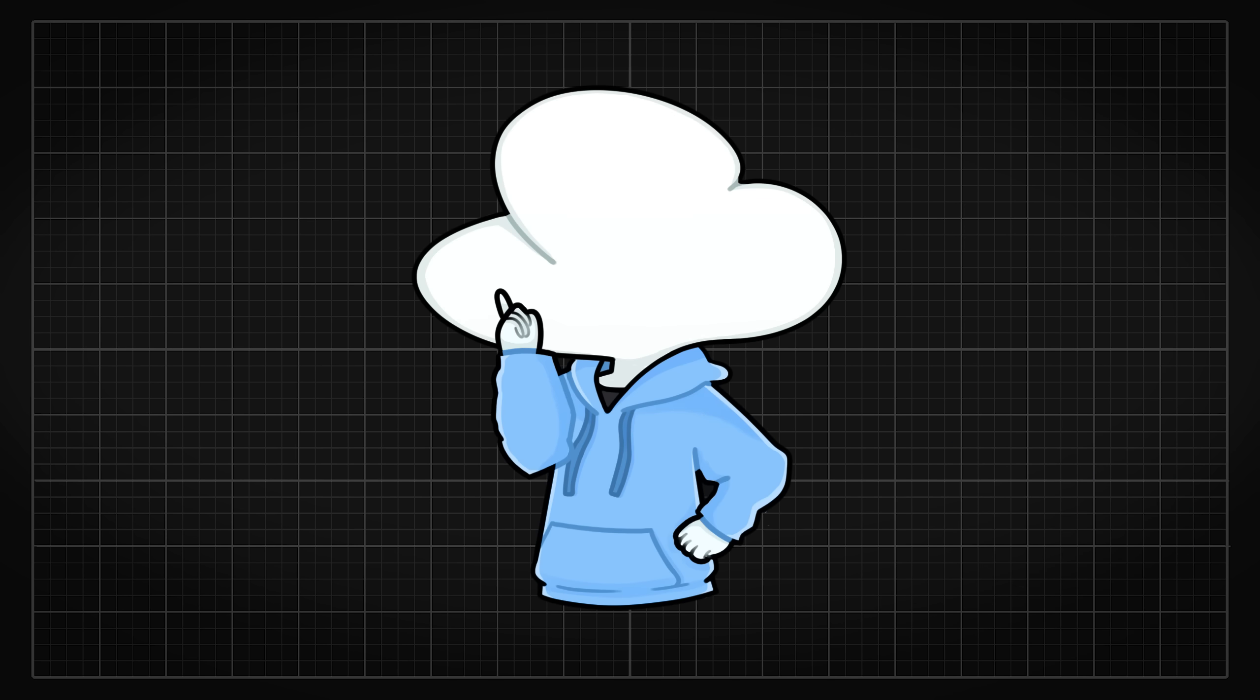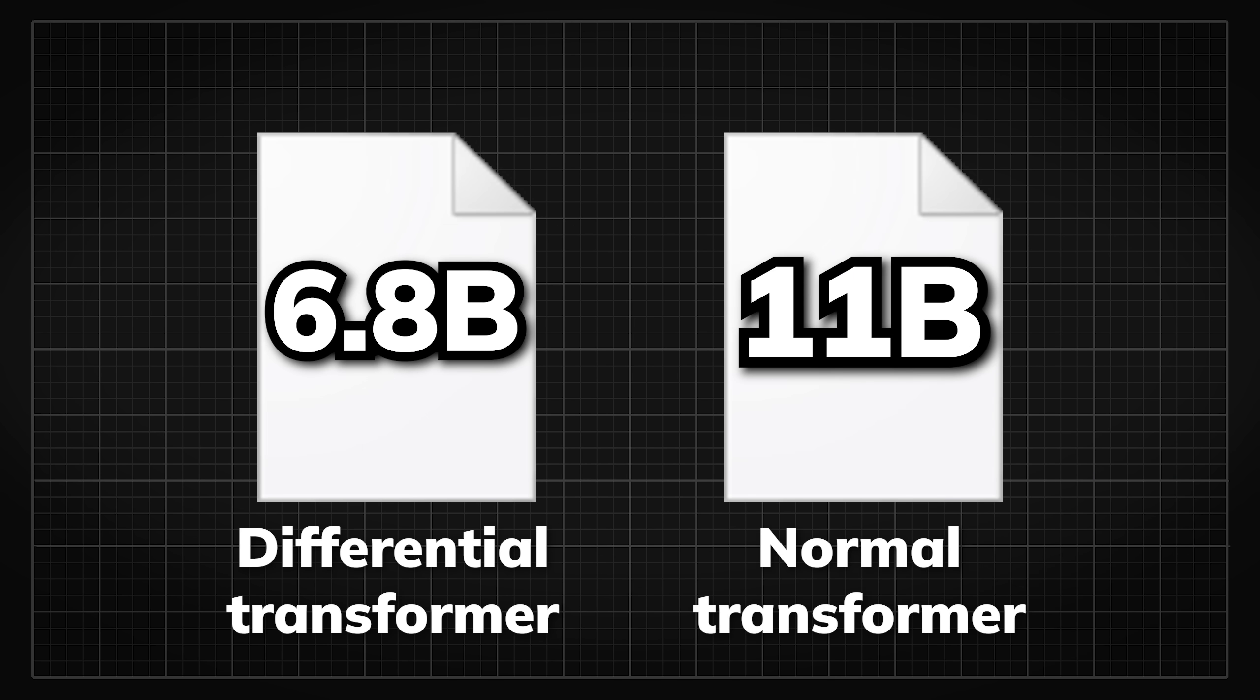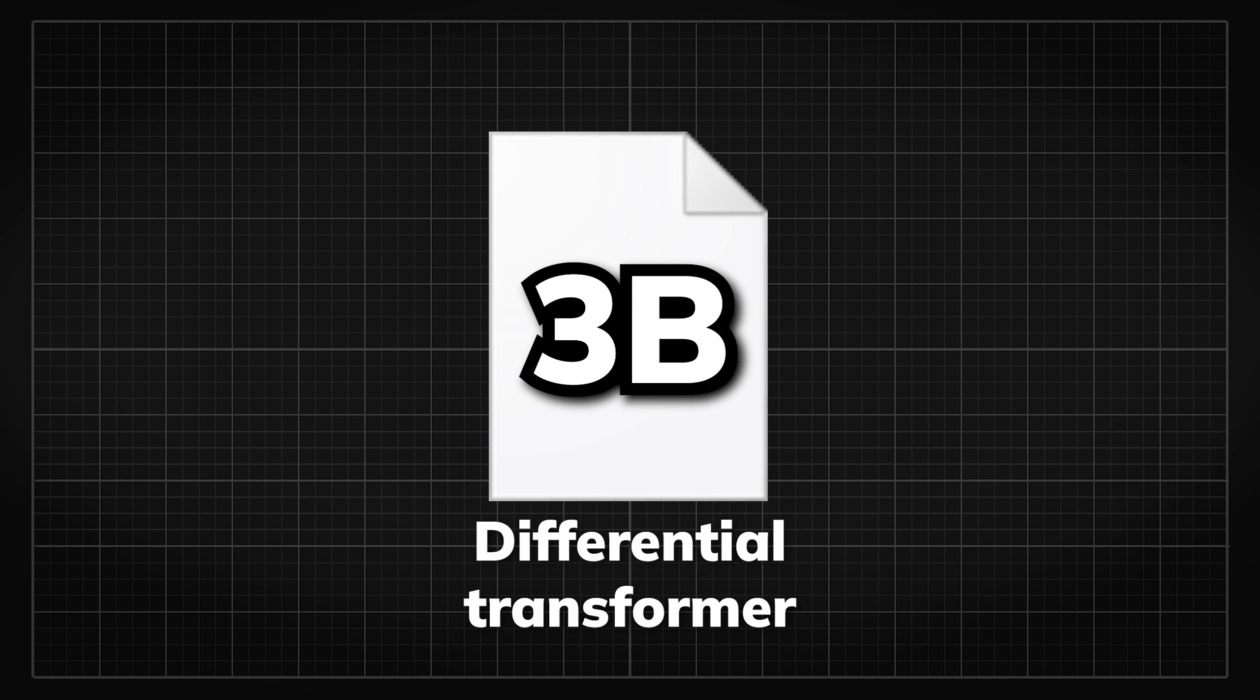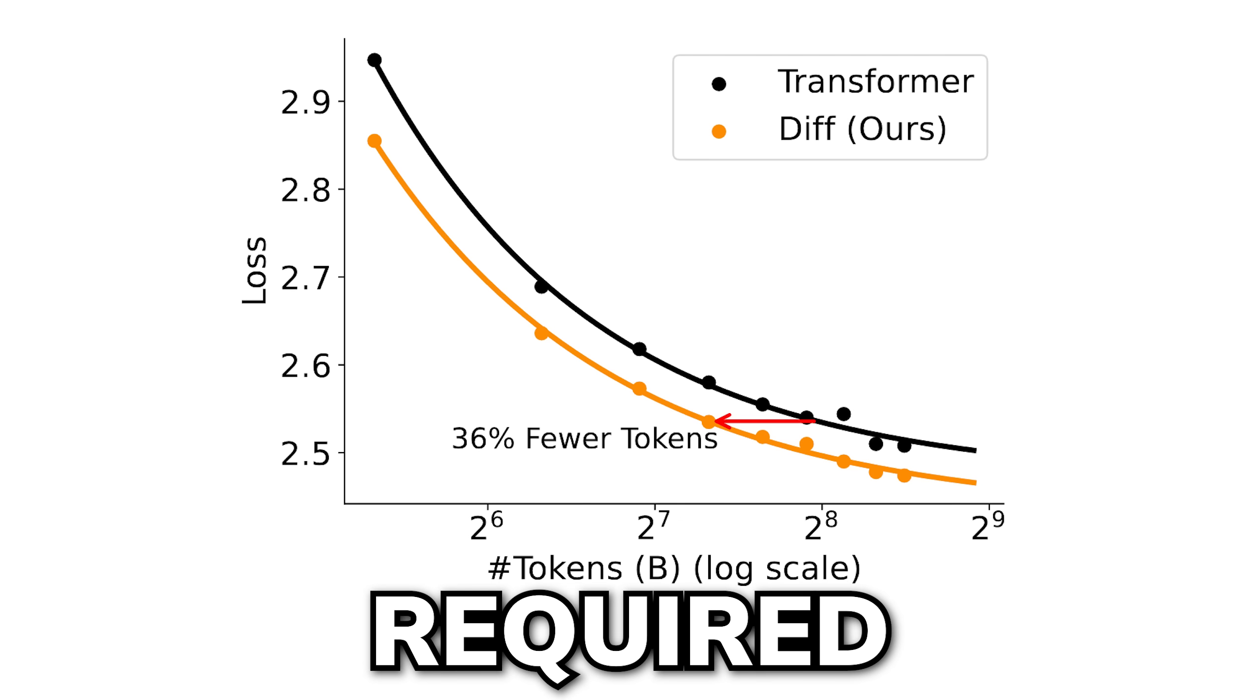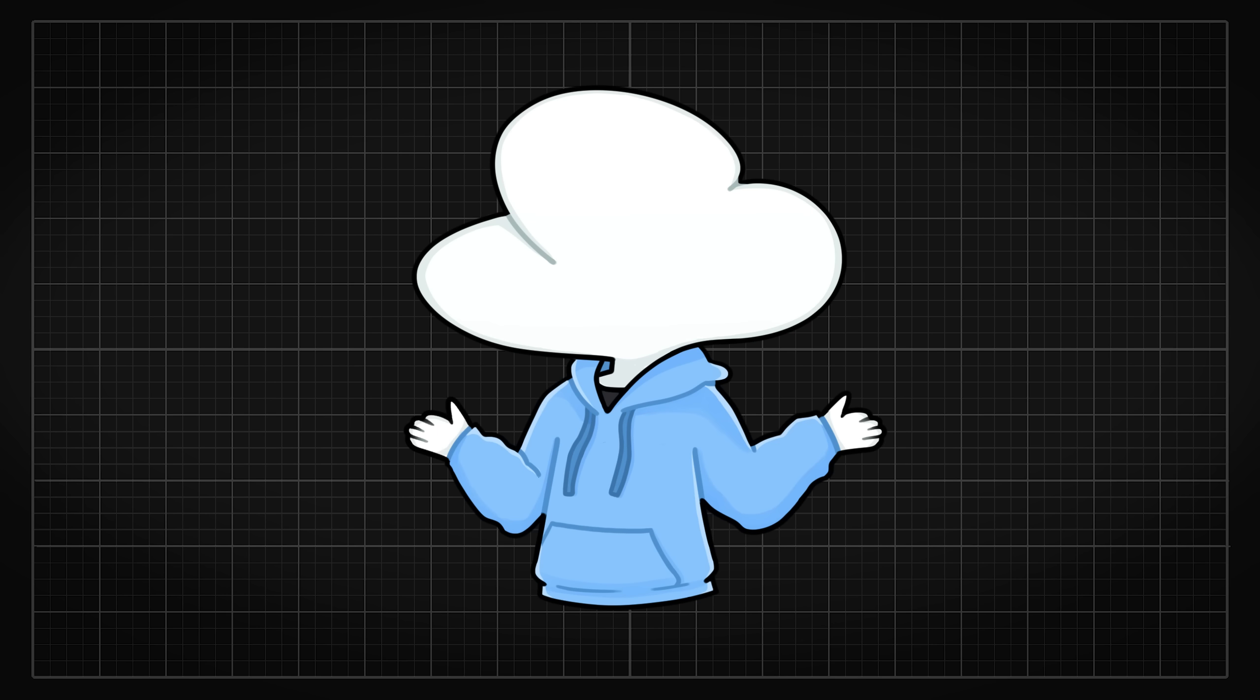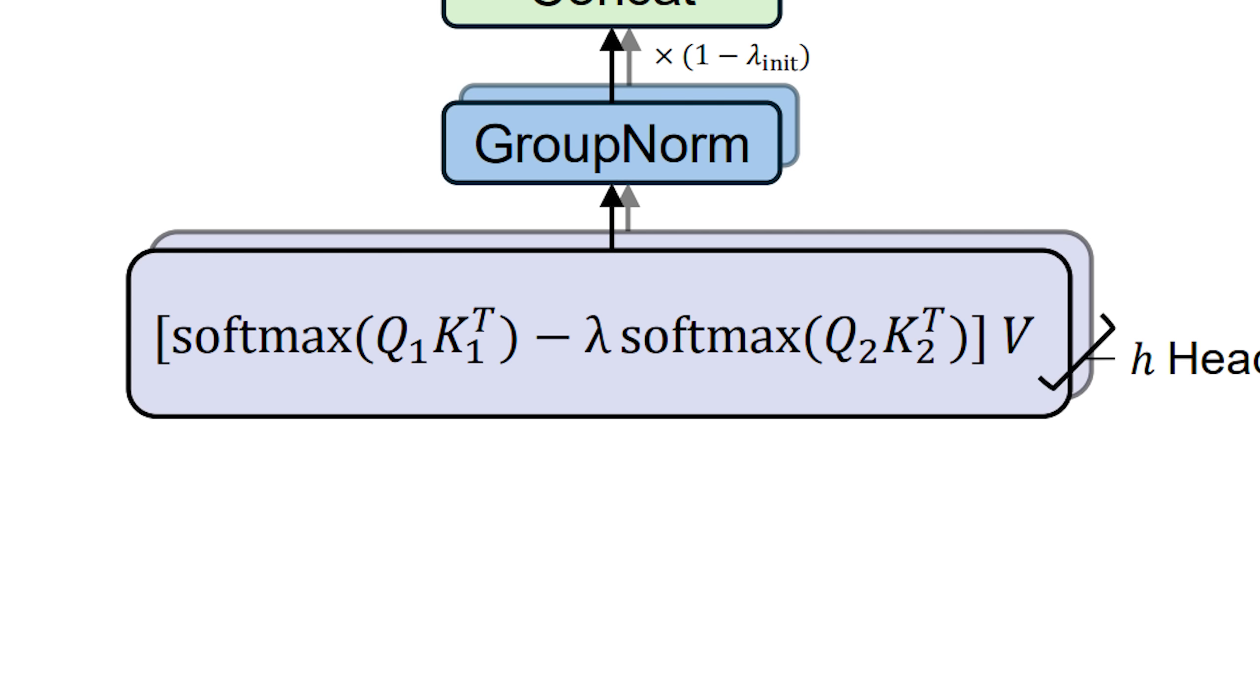How locked in, you say? So, their experiment compared a 6.8 billion parameter differential transformer to an 11B transformer, and the differential transformer achieved the same validation loss with only 62.2% of its parameters. On a 3 billion parameter experiment, the differential transformer required only 63.7% of the training tokens to reach the same level as the traditional transformer. On top of that, the computational cost did not increase significantly. For smaller models, there was a maximum 12% increase in computational requirements, but as model size increased, this extra compute overhead dropped to about 6%.